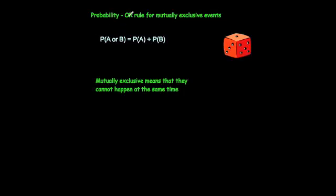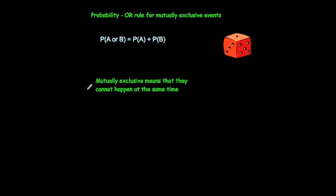In this video we're going to look at the probability and the OR rule for mutually exclusive events. If you want the probability of A or B, that's equal to the probability of A plus the probability of B, if they're mutually exclusive. Mutually exclusive means that they can't happen at the same time.